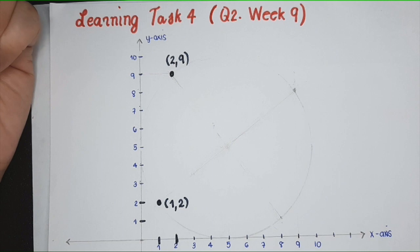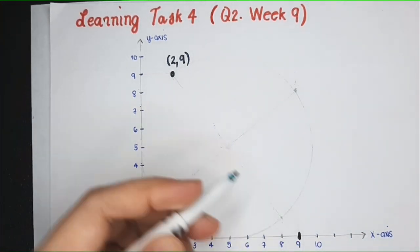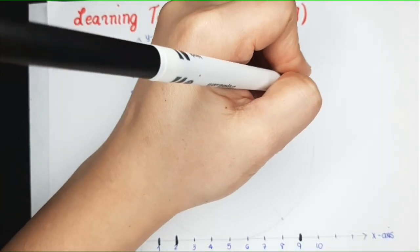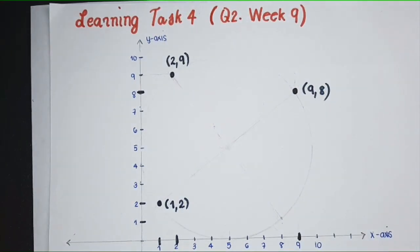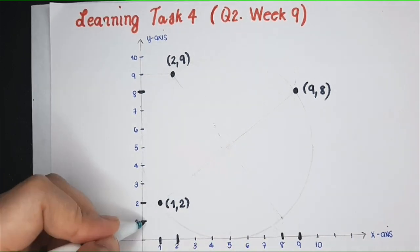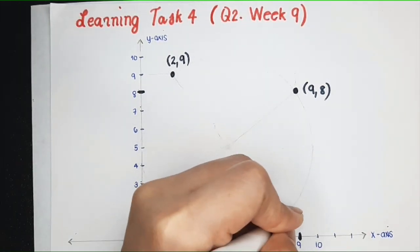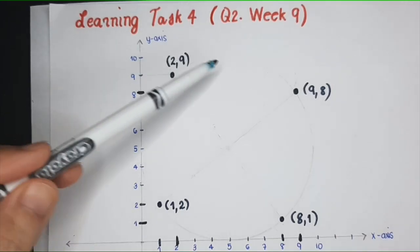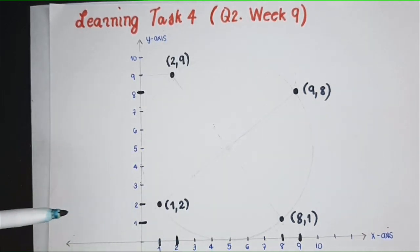Where else? (9,8). So, 9 on the x-axis, and then 8 on the y-axis. Here, this is the point (9,8). And then lastly, we have (8,1). So, 8 on the x-axis and then 1 on the y-axis. Here, this is the point (8,1). These are the locations of the bushes of Sampaguita.